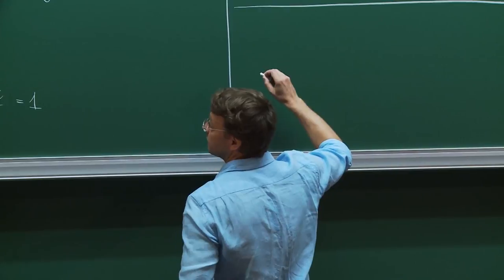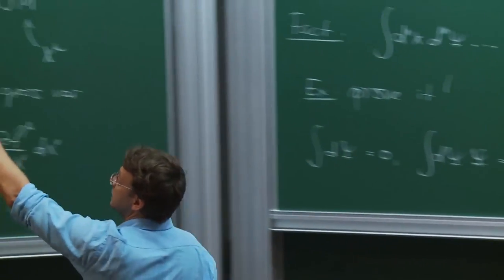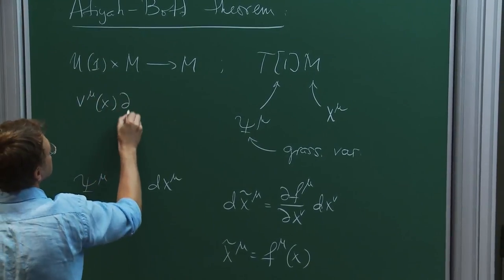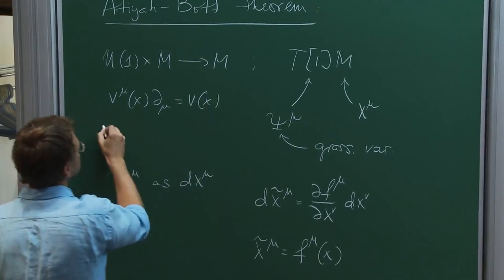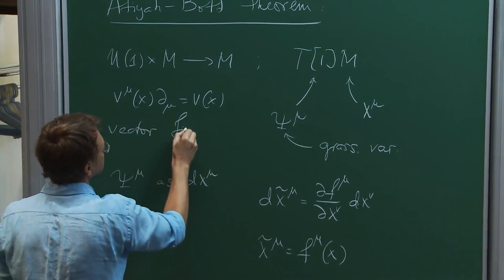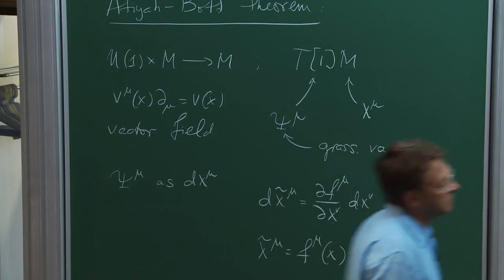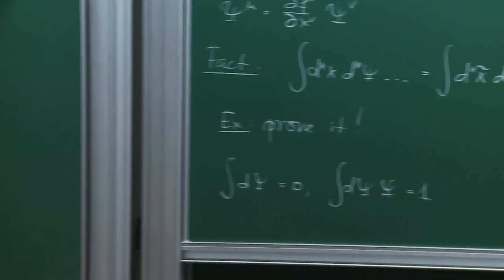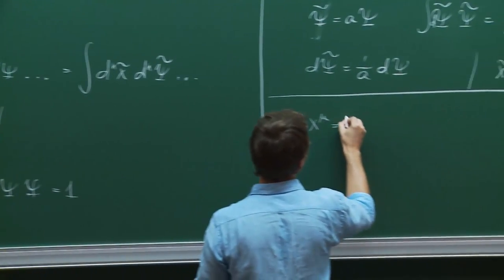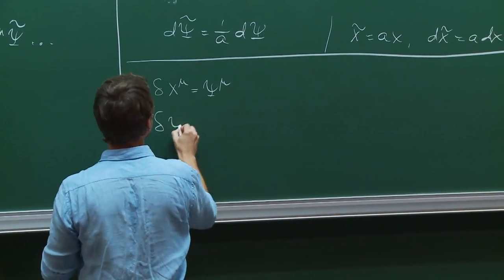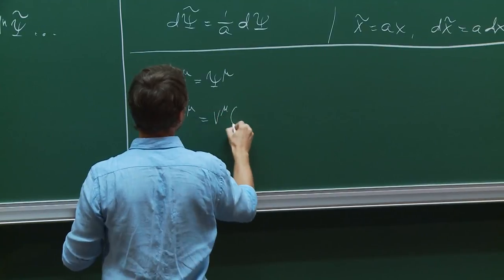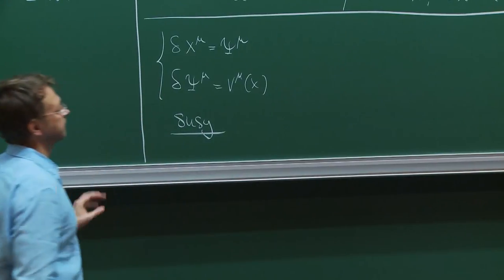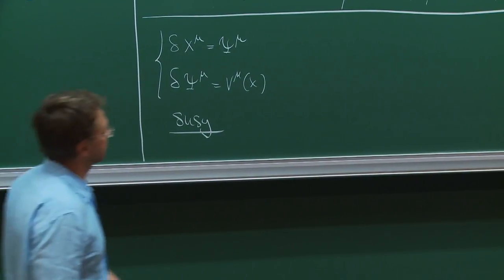Now, let me say the following. As I told you, I have a U(1) action, and let me assume I will have a corresponding vector field V for this action. Let me write the following transformations: δx^μ = ψ^μ, δψ^μ = V^μ(x). I will call this supersymmetry. Let's discuss what it means geometrically.